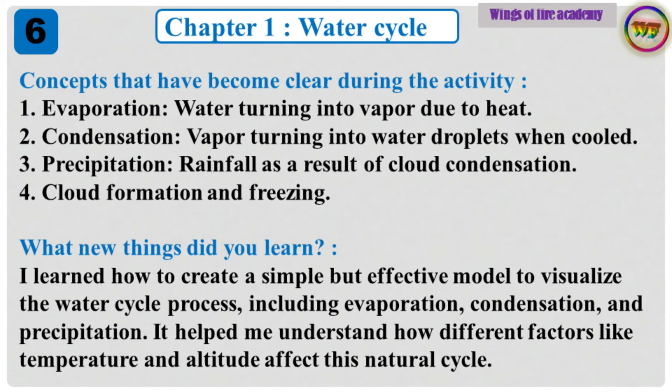Concepts that have become clear during the activity: 1. Evaporation — water turning into vapour due to heat. 2. Condensation — vapour turning into water droplets when cooled. 3. Precipitation — rainfall as a result of cloud condensation. 4. Cloud formation and freezing.